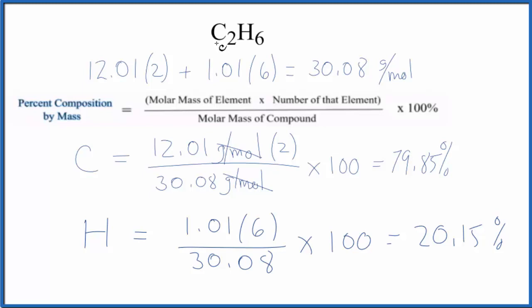And this is how you find the percent composition by mass for each element in C2H6. These numbers should add up to 100 or very close to 100. This is Dr. B, and thanks for watching. We'll see you next time.